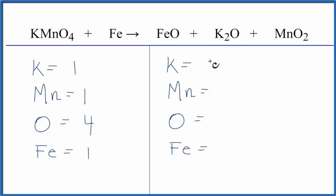On the product side we have two potassiums, one manganese, oxygens. We have one plus one plus two, that equals four. And then iron, we have just one. So everything's pretty close.